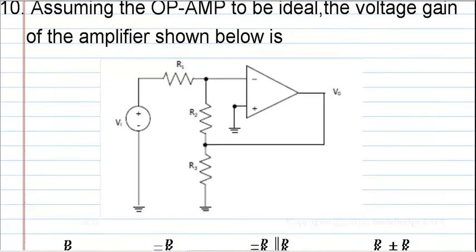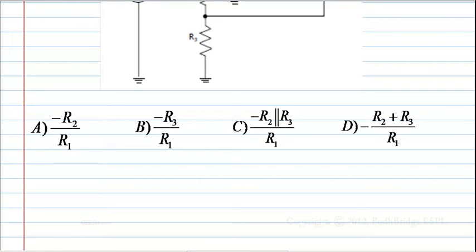the diagram is as shown, and the options are: first option, minus R2 by R1; second option, minus R3 by R1; third option, minus R2 in parallel with R3, divided by R1; fourth option, minus R2 plus R3, divided by R1.